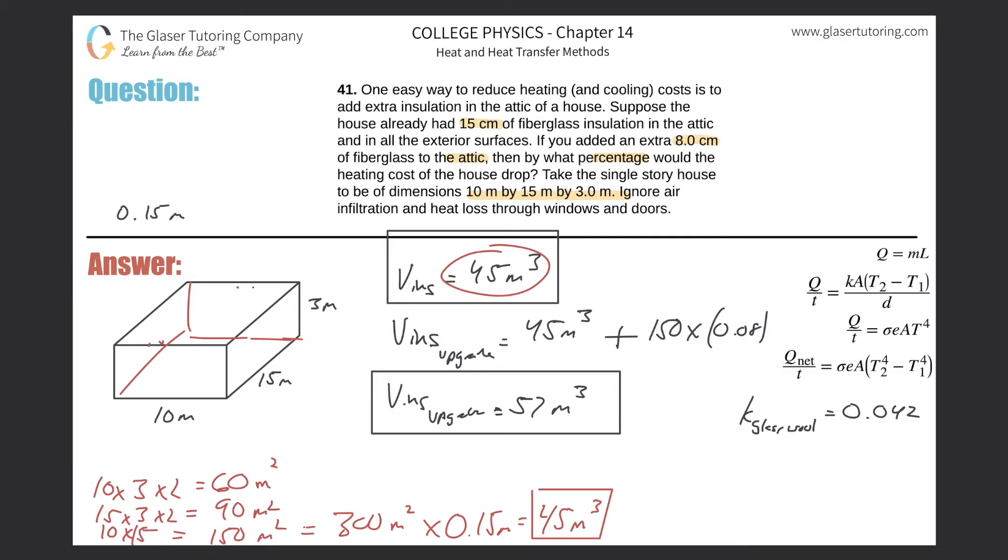By what percentage with the heating costs of the house drop. So basically however much more it increased, we can then figure out the percent drop of it. So how much did it increase? Well, we can simply do 57 over the 45 and we can figure out how many times more there is. So 57 over 45.